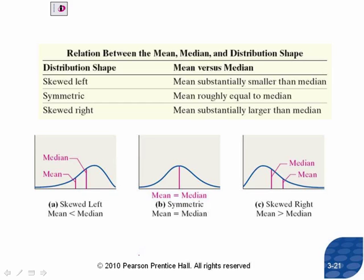When you have skewed left data, in general, the mean is less than the median. When you have symmetric data, the mean is the same as the median. When you have skewed right data, the mean is bigger than the median. I said 'in general' — this is not a hard and fast rule. There can be data that's skewed to the right and yet the mean is less than the median; it can happen, and it typically happens with discrete data, not continuous data.